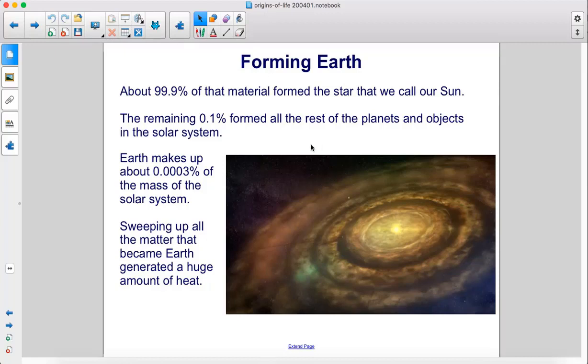Earth makes up about 0.0003% of the mass of the solar system. Sweeping up all the matter that became Earth generated a huge amount of heat.